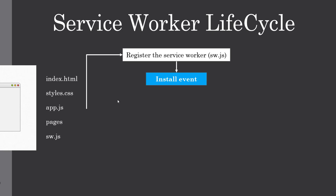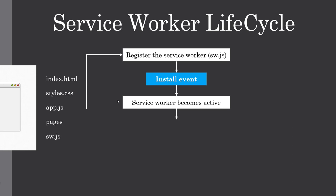It's going to invoke the install event, and we can add callback functions to this particular install event. If the registration of the service worker is successful or not, then we can try to display something. For example, if the registration or the install is not successful, then we can display a warning to the user that the service worker is not available or something. During or after this install event, our service worker becomes active.